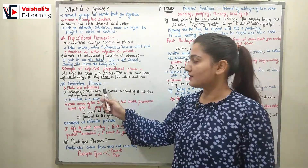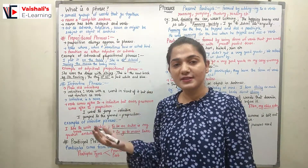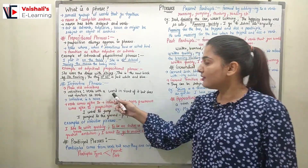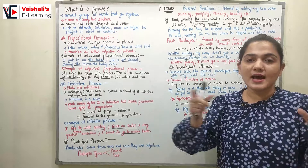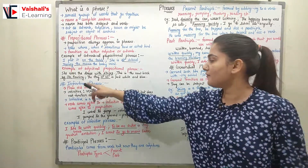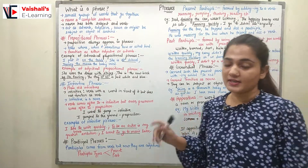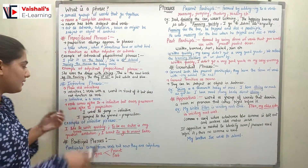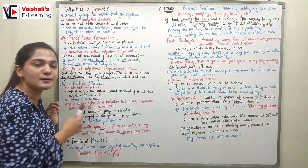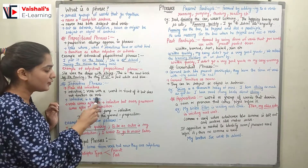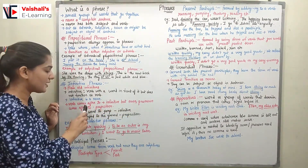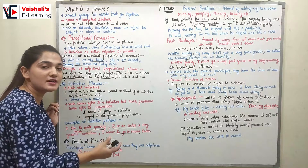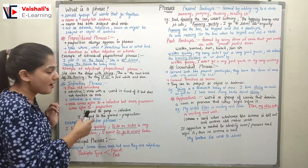Coming to infinitive phrases. Infinitives are a verb with the word 'to' in front of it, but it doesn't act like a verb — it acts as a noun. A verb that comes after 'to' is an infinitive. However, if a noun or pronoun comes after 'to', then 'to' is a preposition, not part of an infinitive.